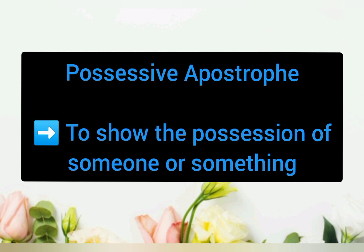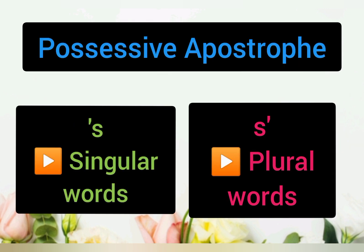Possessive apostrophe is to show the possession of someone or something. Possessive apostrophe digunakan untuk menunjukkan kepunyaan seseorang atau sesuatu benda. For singular words, we usually add apostrophe S to show the possession. Untuk satu, kita akan tambah apostrophe S untuk menunjukkan kepunyaan.